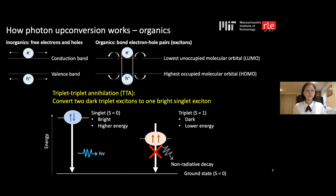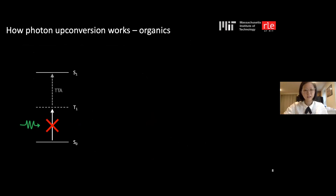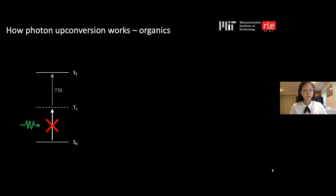Triplet-triplet annihilation is a process that converts two dark triplet excitons into one bright singlet exciton. Energy-wise this process goes uphill, which is why we can use TTA as a mechanism for photon upconversion. However, since triplet decay doesn't emit light, we also cannot directly generate triplets through light excitation.